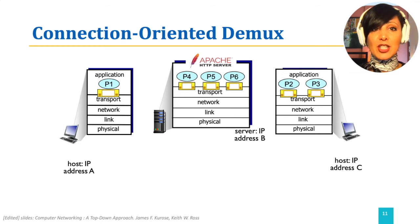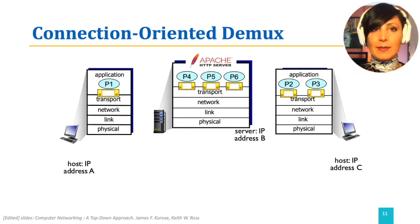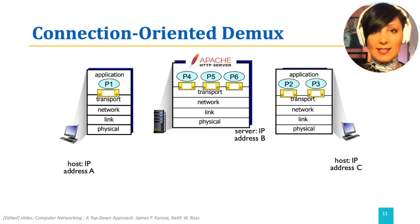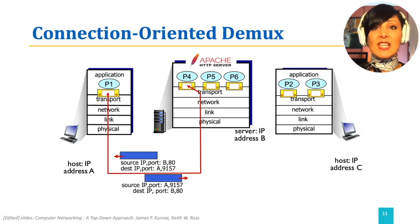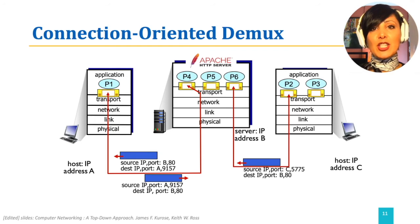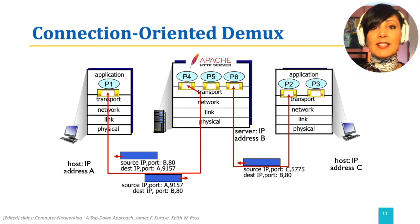If host A and host C decide to initiate connections to the HTTP server on server B, they need to address their segments to port 80 on host B. Each TCP socket is identified by a four-tuple, and changing each of these values identifies a different socket. Therefore, unlike UDP, segments with the same destination port may not end up in the same socket. For example, host A initiates a connection from its port 9157 to port 80 of host B, and host C also initiates a TCP connection from its port 5775 to host B's port 80. These packets will end up going to different sockets at server B, identified not only by port 80 but also by the three other values in the four-tuple.